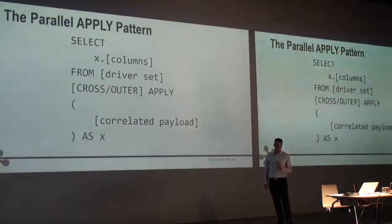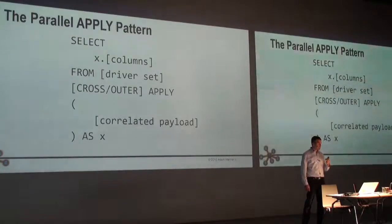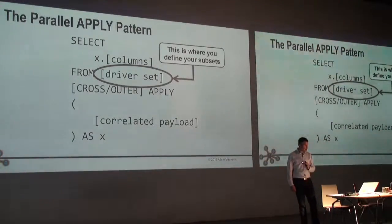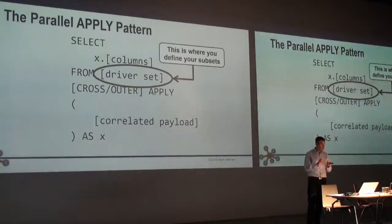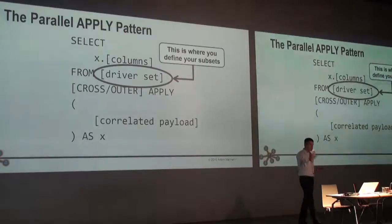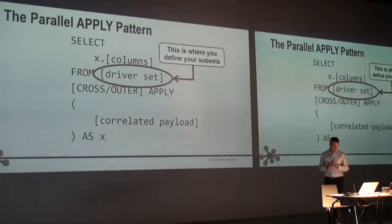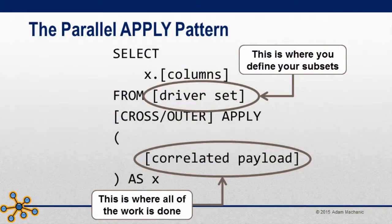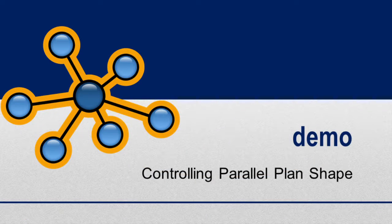Here's the parallel apply pattern — it's very simple. We select some data from a derived table X, but X is called on behalf of what I refer to as the driver set. The driver set is where you define subsets based on your grain — your products, customers, dates, or whatever you're processing about. Inside the apply, you put what I refer to as the correlated payload. If your grain is product ID, your correlated payload will say WHERE product_id = driver_set.product_id. The driver set will exist as a nested loop, and the correlated payload will be called inside the nested loop. By leveraging this properly, we can control parallelism and the size of operations.